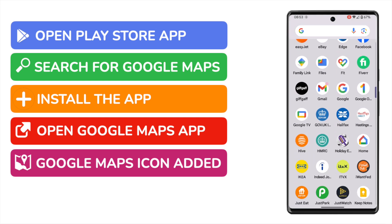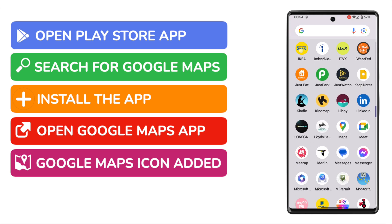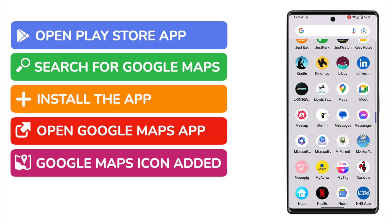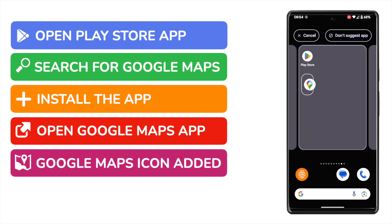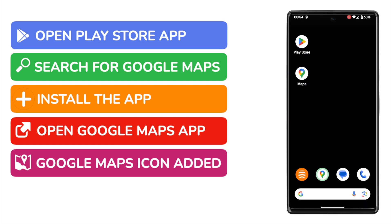I'll move down to the Google Maps app, and I'll move it to the home screen by simply tapping and holding the app icon. You'll see I can then drag the app to the home page for my phone.